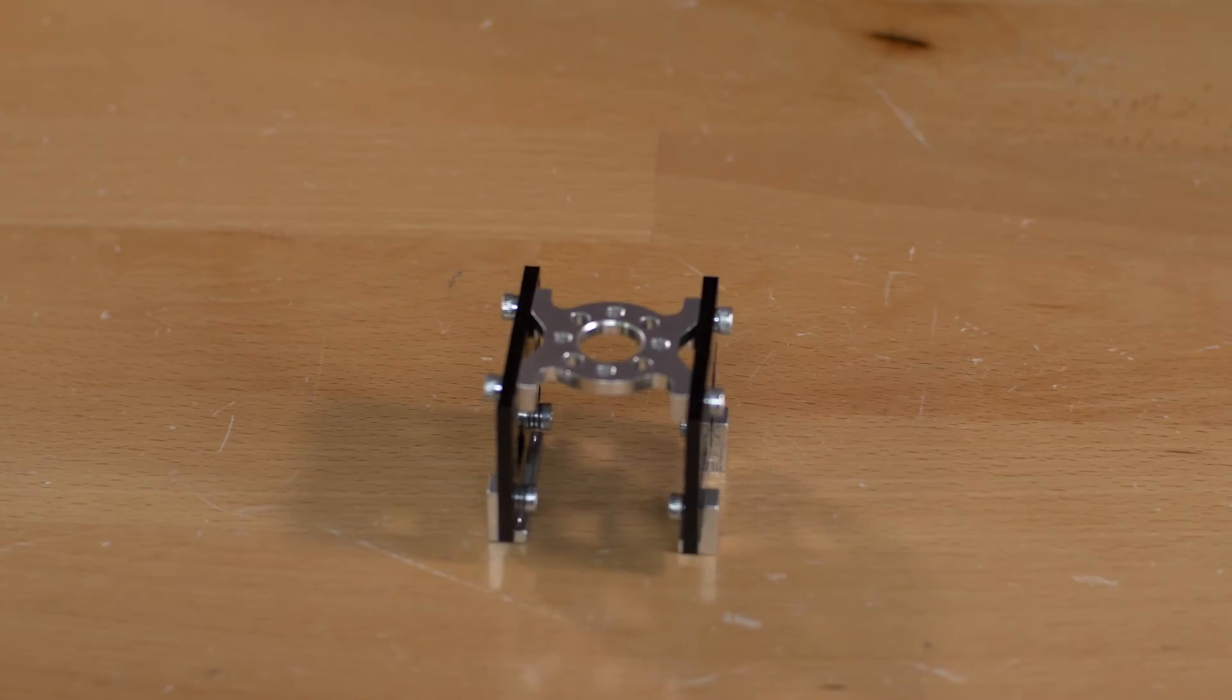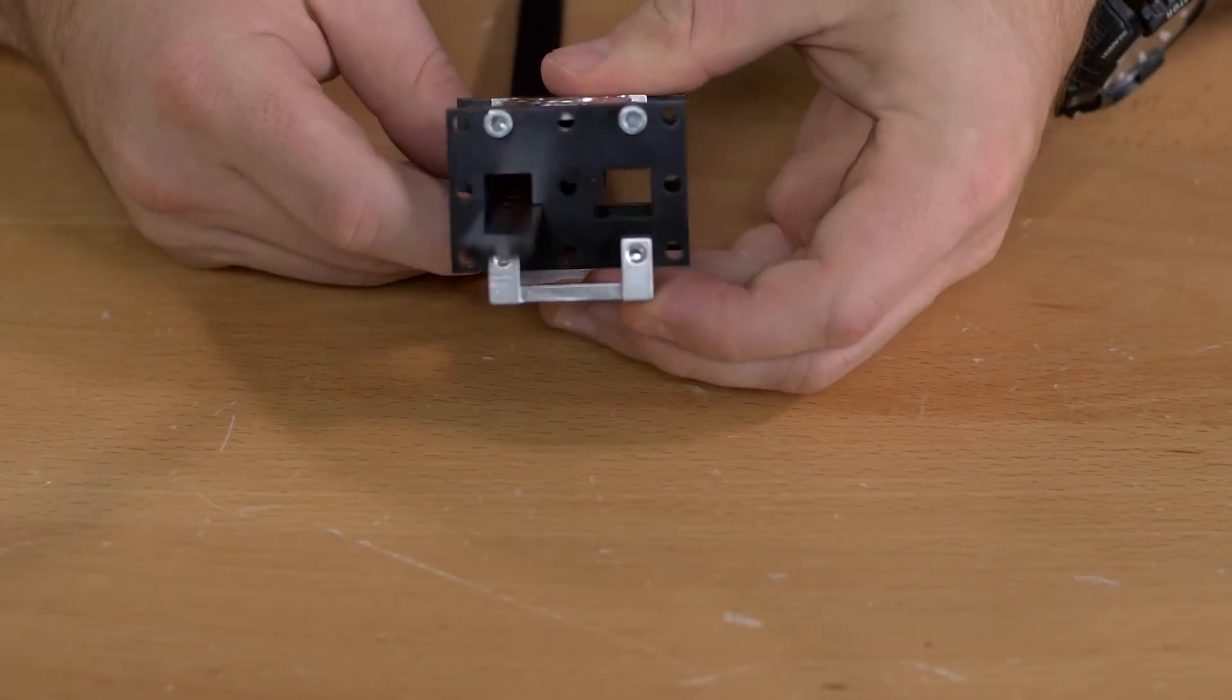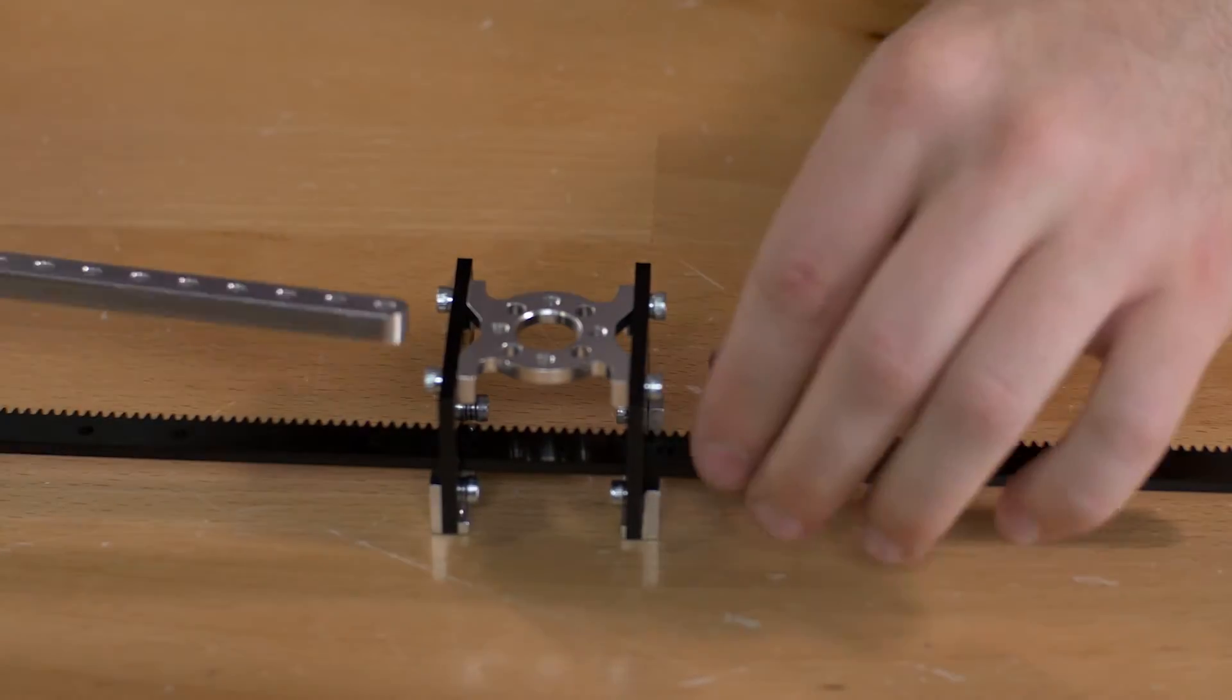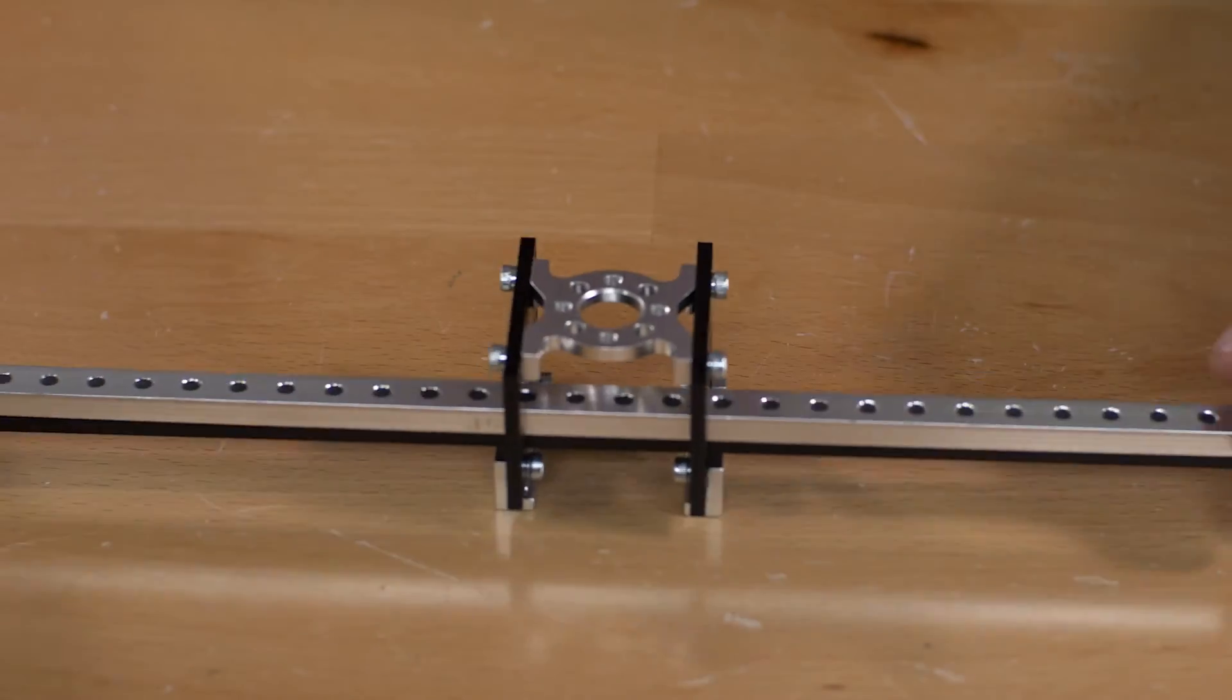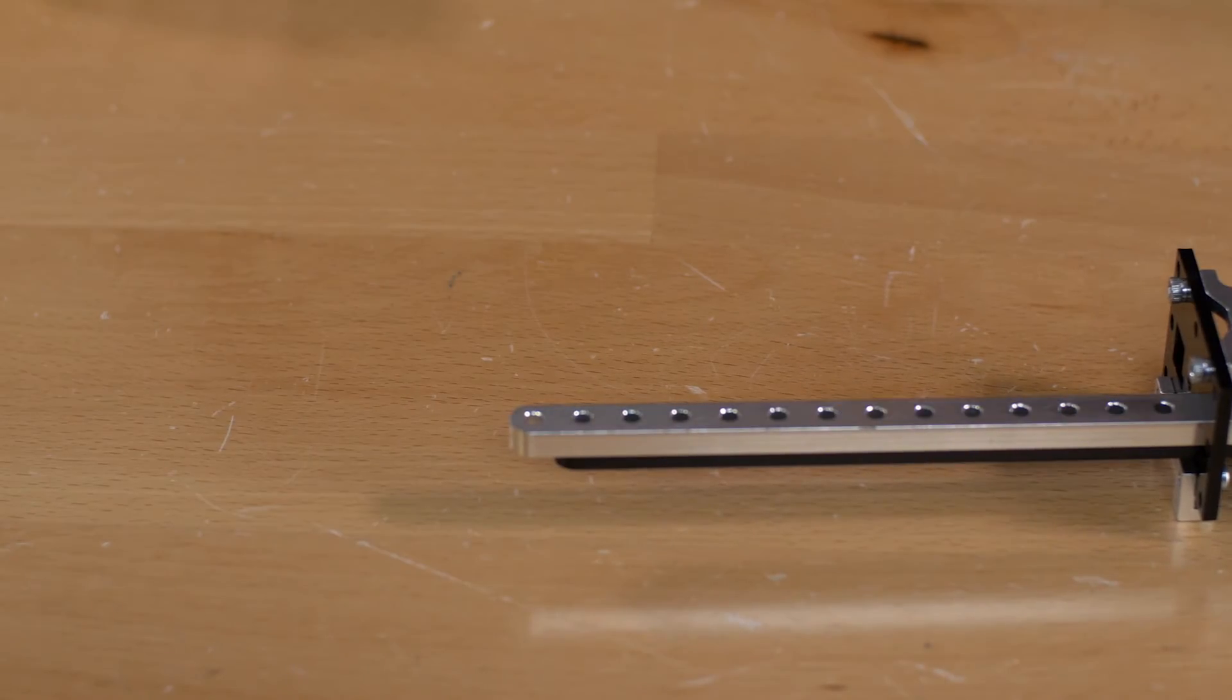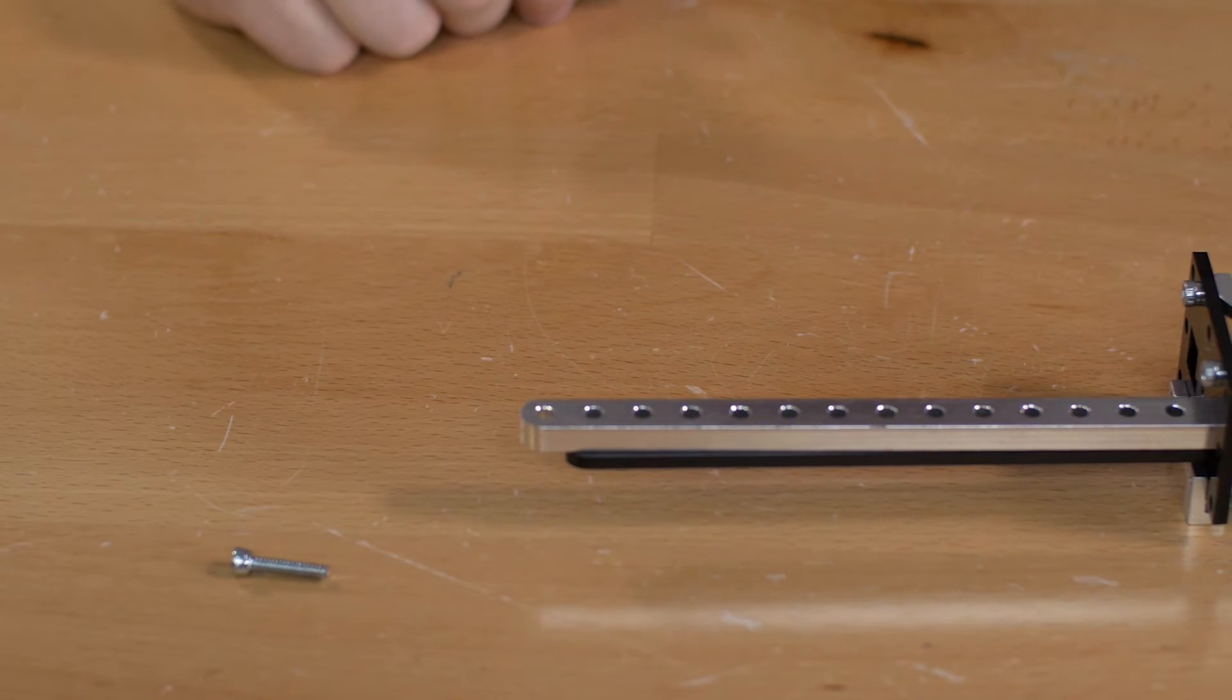Once you have that together you're going to slide in one of your beam gear racks onto one of the sides with the hole. On top of that you'll slide in the aluminum beam. Those are going to connect using a five-eighths inch socket head screw and a number six washer.